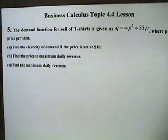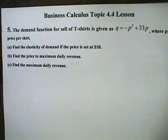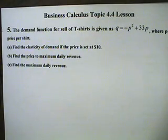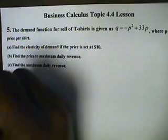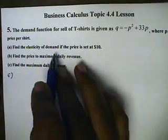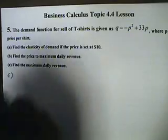This is Kyle. Topic 4.4, Lesson, Problem number 5. The demand function for the sale of t-shirts is given by Q equals negative P squared plus 33P, where P is the price per shirt. We want to first find the elasticity of the demand if the price is set at $10.